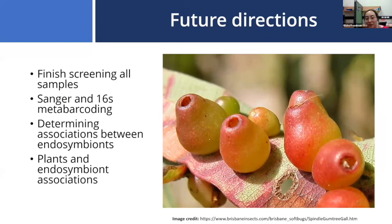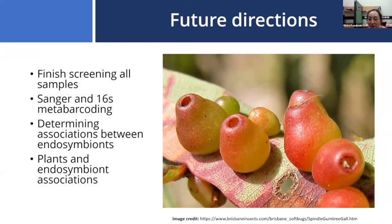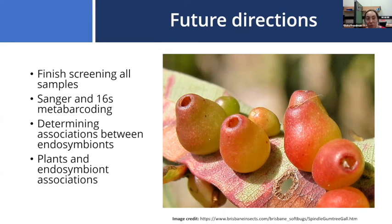This part of my project is still in its infancy. I'm going to finish all the sample screenings, then do some Sanger sequencing and possibly 16S metabarcoding on select individuals to see their whole microbiome and check for any endosymbionts I might be missing — since I only targeted five of the most common secondary endosymbionts in the literature. I also plan to do variance-covariance matrices to determine correlations between different endosymbionts within species, and do the same with host plants, to identify trends that could serve as a springboard for further hypotheses about why these relationships exist.